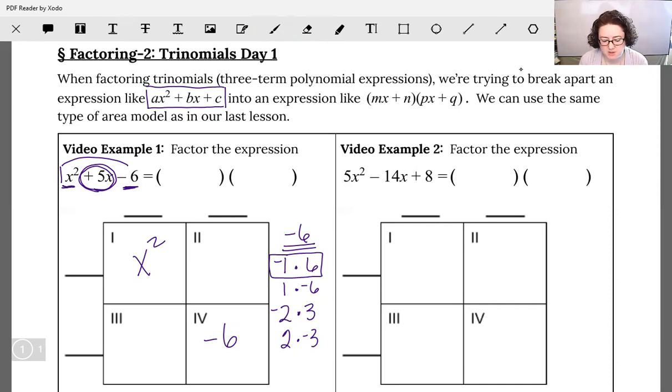And so what I'm going to do is use that brainstorming to break up that middle term. So that positive 5x, if I write that as a negative 1x and a positive 6x, those two combine to make the positive 5x.